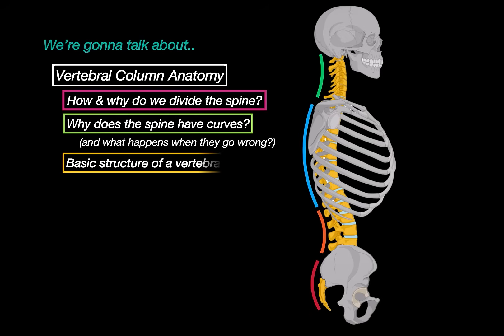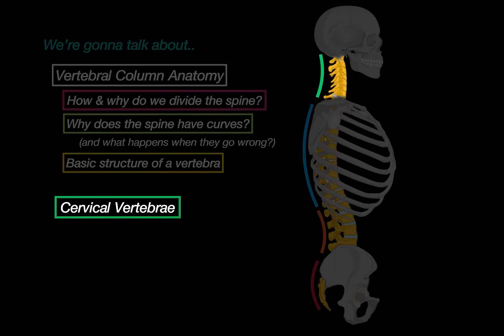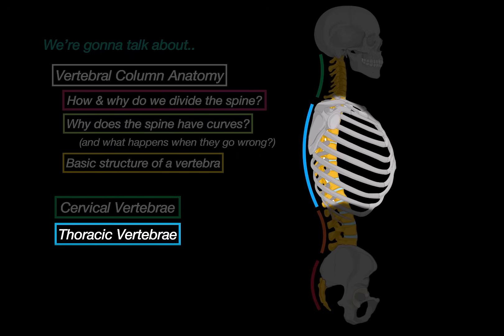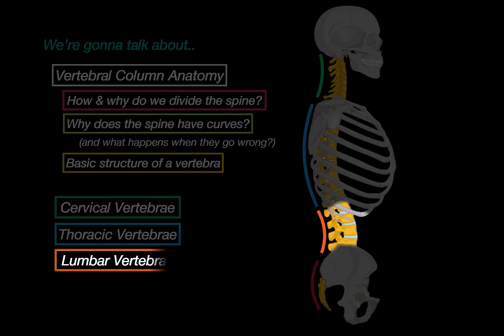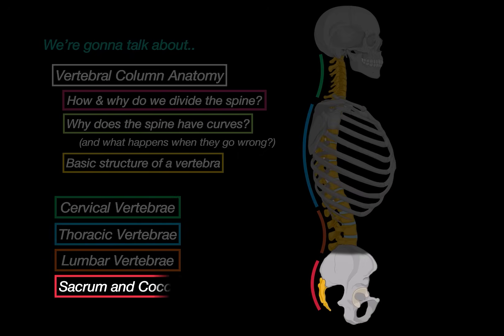Then we will look at the basic structures of the vertebrae, which is common across the majority of the vertebrae throughout the column. After that, we will talk specifically about the cervical vertebrae, thoracic vertebrae, lumbar vertebrae, and the sacrum and coccyx.